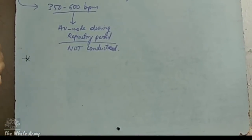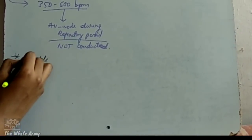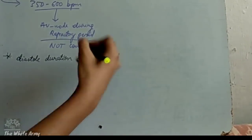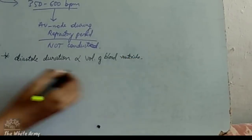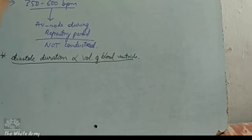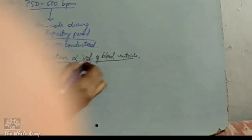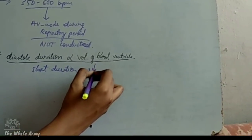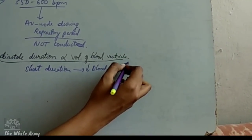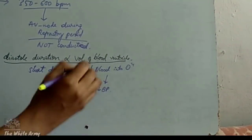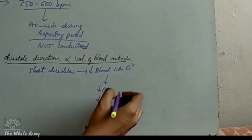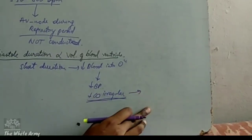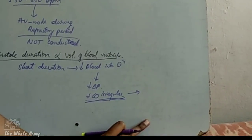From our knowledge of physiology, the duration of diastole is directly proportional to the volume of blood pumped from the ventricles into the circulation. In atrial fibrillation, this diastolic duration is short. Hence, due to the short duration, less blood volume will be pumped into the circulation, leading to hypotension and reduced cardiac output irregularly due to irregular ventricular contractions. This leads to an irregularly irregular pulse and a pulse deficit of more than 10 beats per minute.